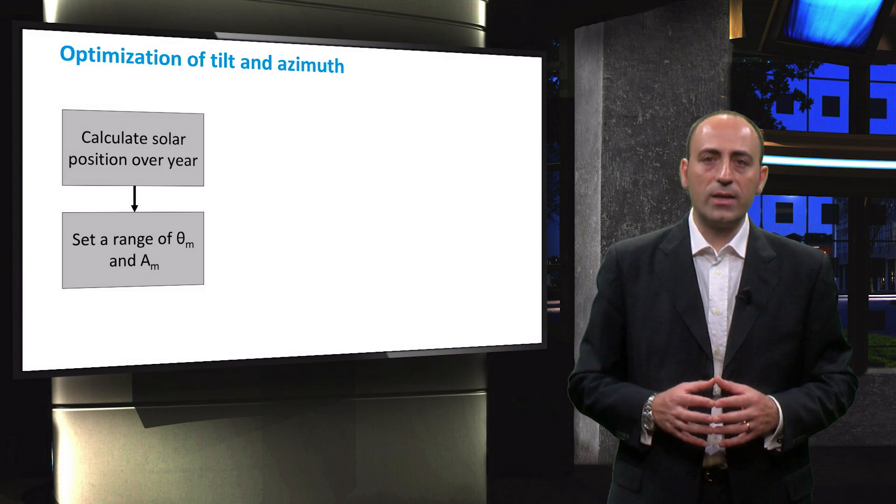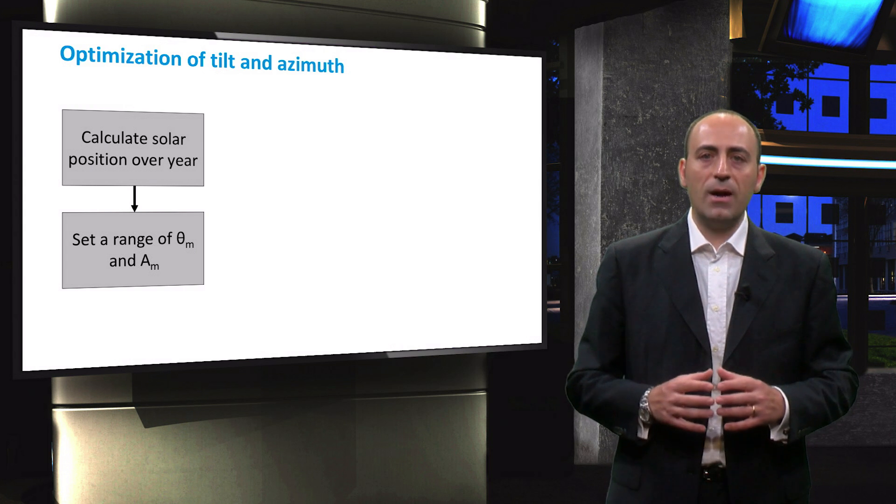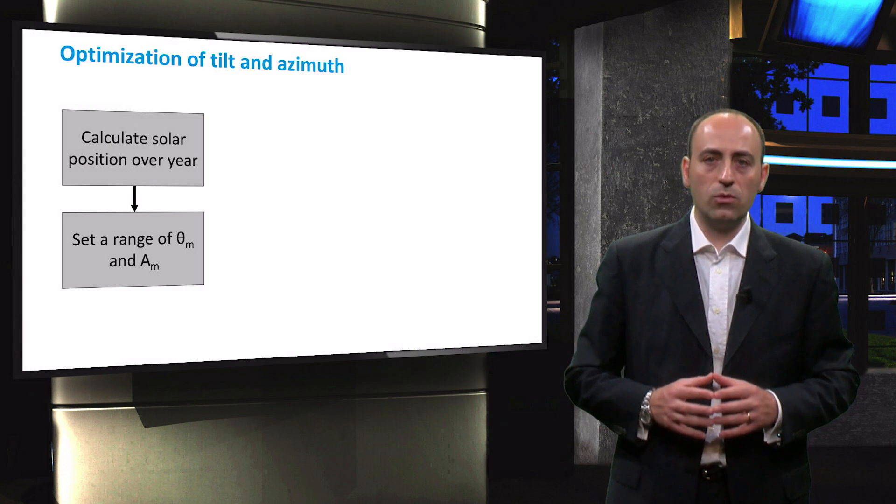Some people, for example, have the financial means to completely cover their roofs, regardless of its orientation. Therefore, clients might ask for information about the performance of PV modules with non-conventional azimuth angles.